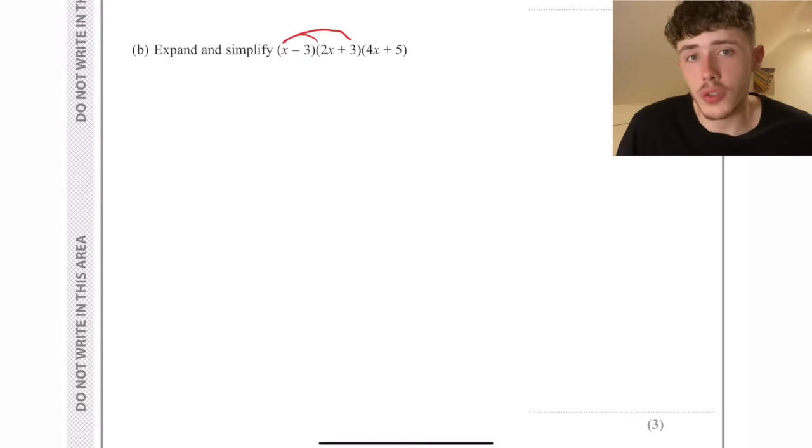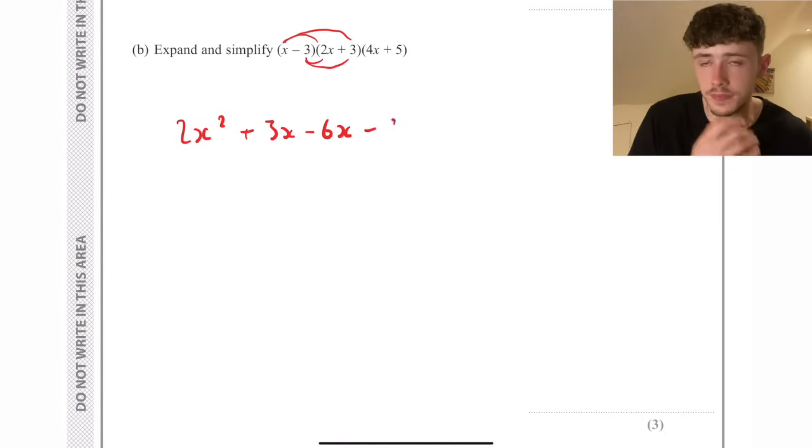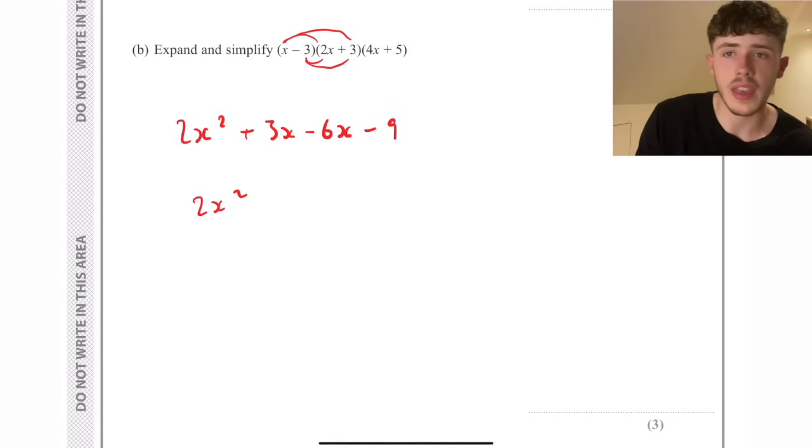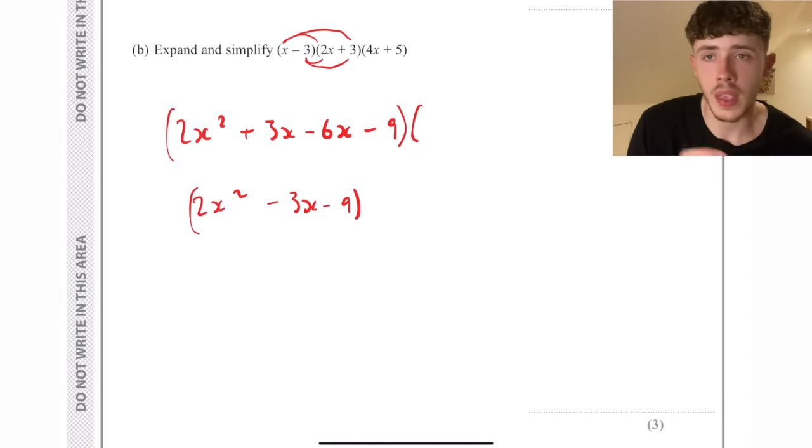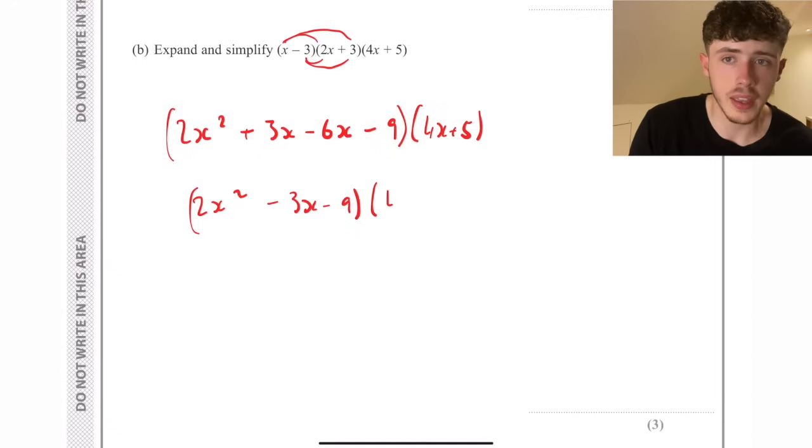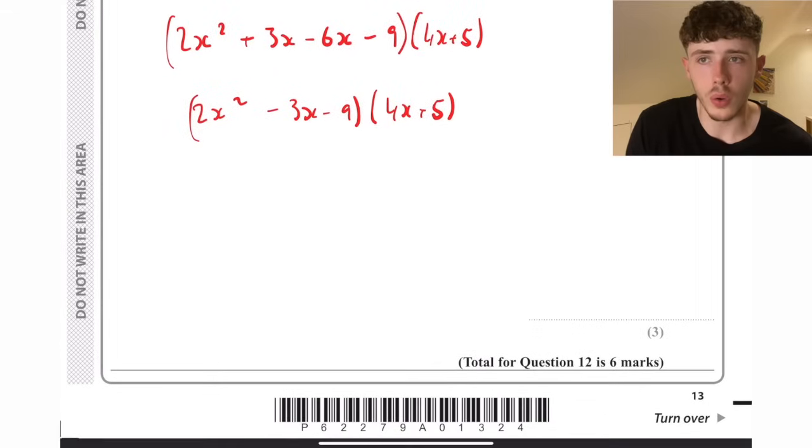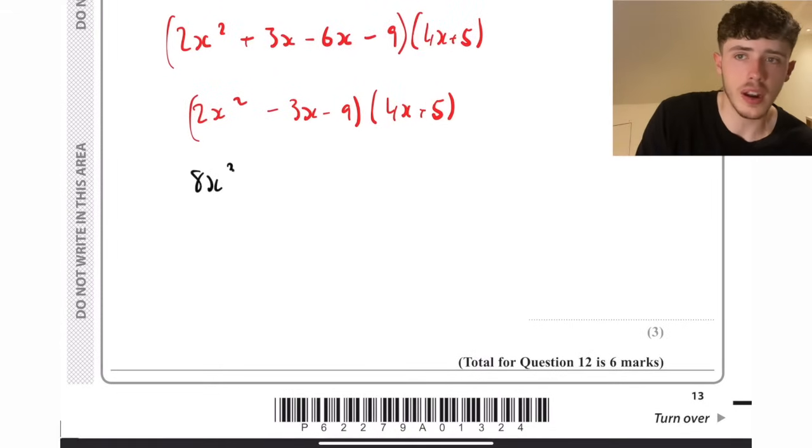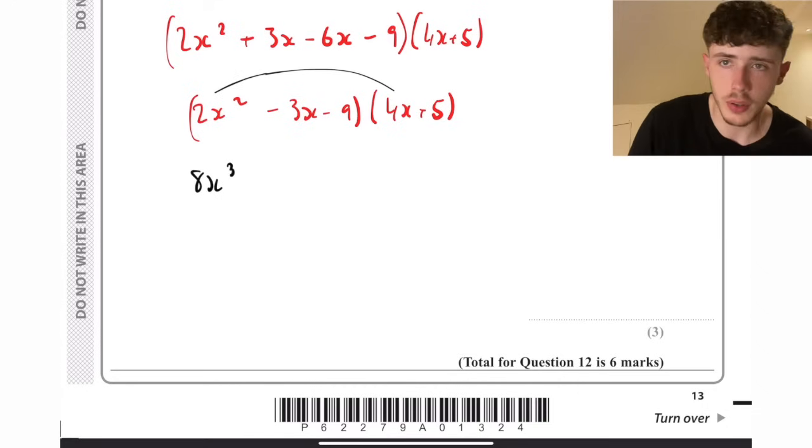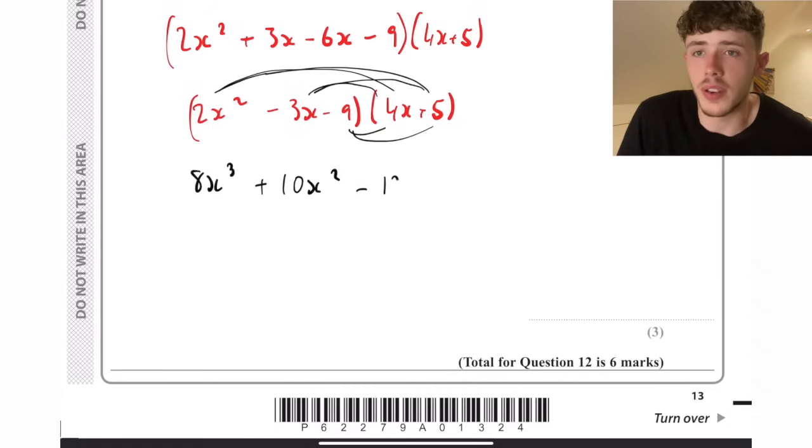When expanding and simplifying a triple bracket, at first ignore the third one, focus on the double bracket. If we expand that out using the normal double claw method, we get 2x squared, the x coefficients cancel down a bit to make minus 3x, and then minus 9. We then introduce that final third bracket, and this time we kind of have a triple claw going on. So we do 2x squared times 4x, 2x squared times the 5, as you can see I'm doing here. Once we do all of that, it should look something like this at the end, and then we cancel down all our results to get this as our final answer.